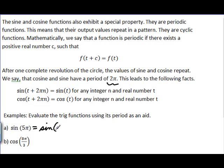So what we want to do here is rewrite 5π as something plus a multiple of 2π. Well, hopefully you can see that sine of 5π would be the same thing as the sine of π plus 4π. So because 4π is a multiple of 2π, this is equivalent to just the sine of π.